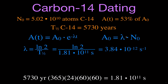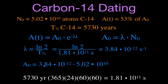Now we can solve for the original activity. The original activity is simply the decay constant times the number of radioactive nuclei: A₀ = 3.84×10⁻¹² × 5.02×10¹⁰ atoms of carbon-14, giving an original activity of 0.193 becquerels.